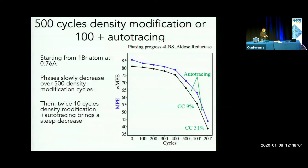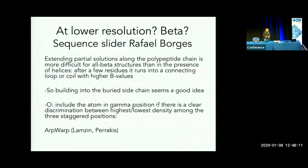Interpreting the map is a great constraint for density modification to pull a solution. Last study weekend, Rafael Borges was telling about a brute force approach used in Archimboldo: putting all possible sequences on partial fragments compatible with the sequence and with some limitations on secondary structure prediction.